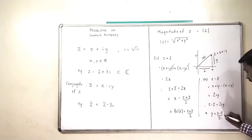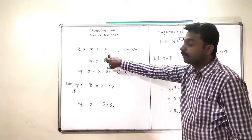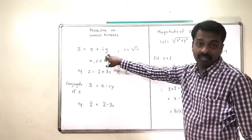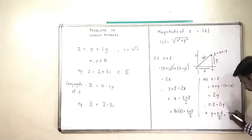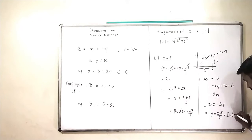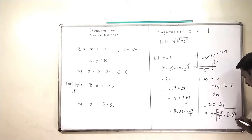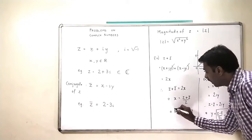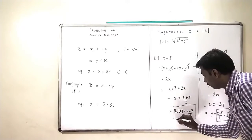And what is Y equal to? It is nothing but the imaginary part of Z. So Z minus Z bar upon 2i gives the imaginary part of Z, denoted IM of Z.